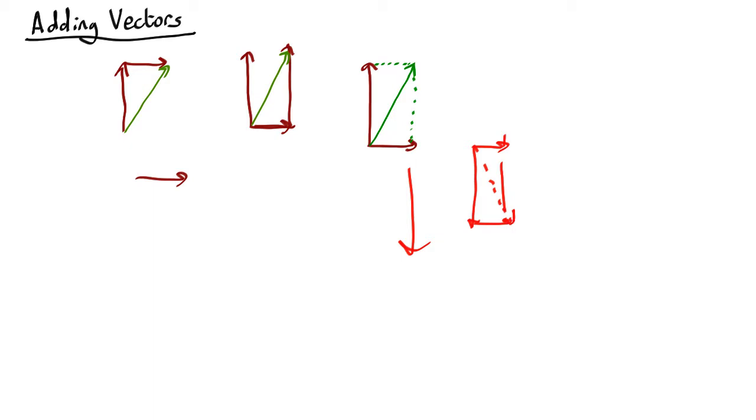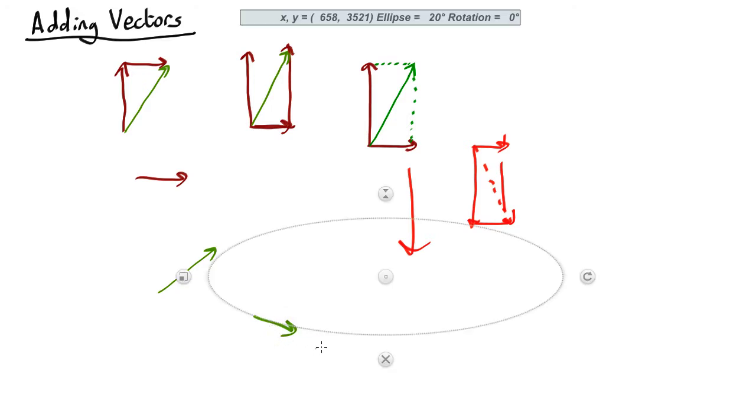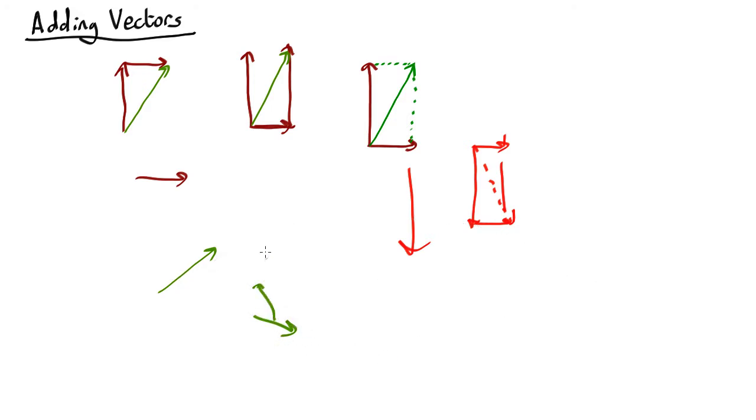What if they're not at right angles? So far everything's been at right angles. But let's say we had this vector and that vector. We'll do the same thing. You slide this one over here so it's nose to tail. And that is the sum of those two vectors.